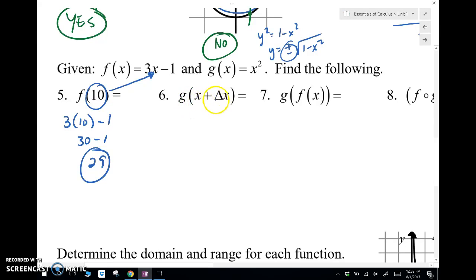g of x plus delta x means take x plus delta x, plug it in anywhere we see an x in our g function. So that's going to be x plus delta x squared. And we're going to multiply that out just for this one, I think. So this would be sufficient, right? Because I said you don't have to simplify.